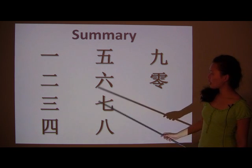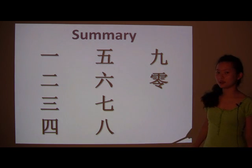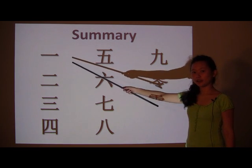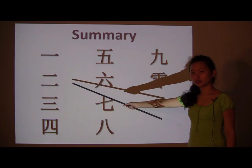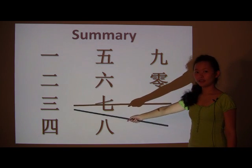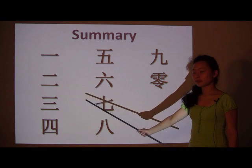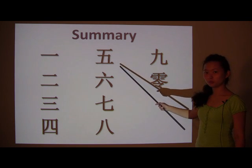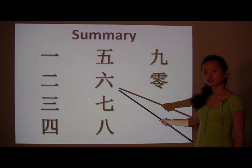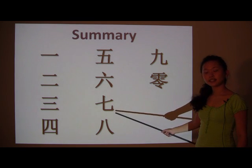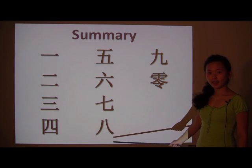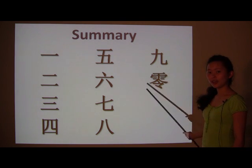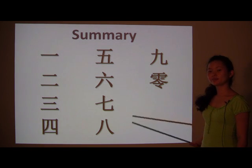And a summary of the first ten numbers, including 0 of course: 一 (yi) for one, 二 (ar) for two, 三 (sa) for three, 四 (si) for four, 五 (wu) for five, 六 (riu) for six, 七 (qi) for seven, 八 (ba) for eight, 九 (jiu) for nine, and 零 (ling) for zero. Thank you.